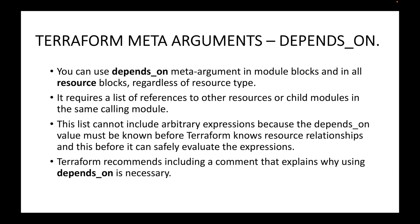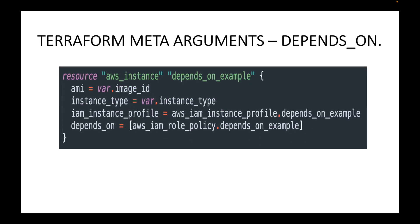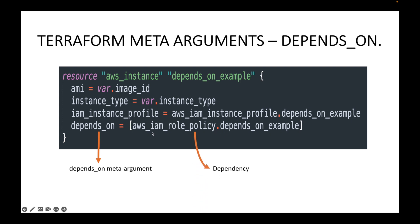Here is my resource block where I'm launching an EC2 instance, and here is the depends_on meta argument I'm creating. This means there will be another resource block which creates an IAM role policy, and this is the local name we've given it. In this case, Terraform will first launch that resource and then my AWS instance will be launched.